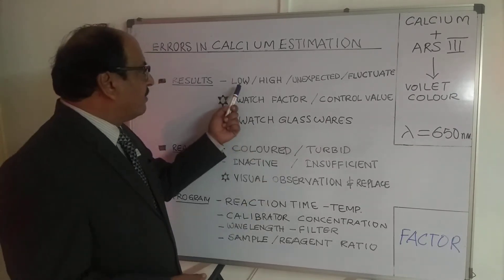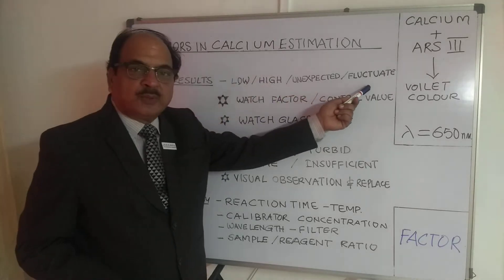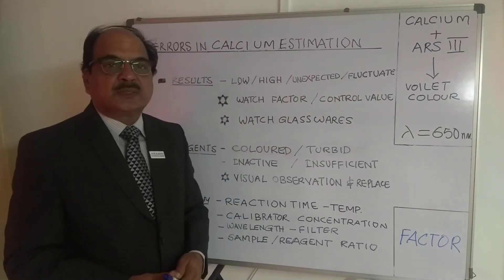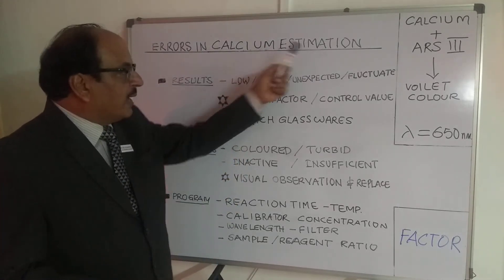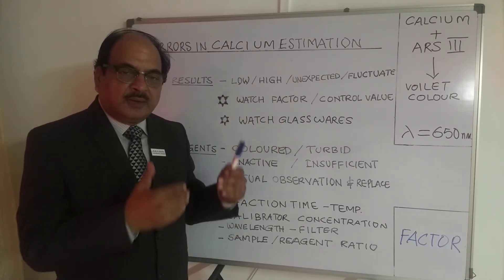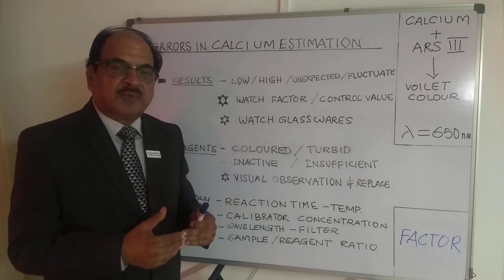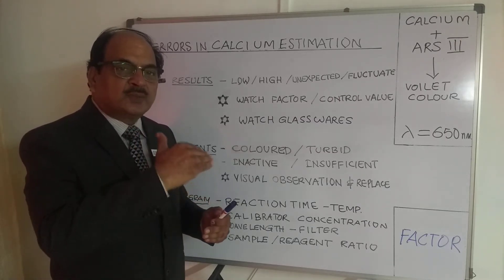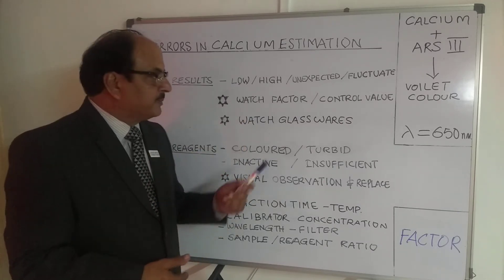In result-oriented errors, there are three or four categories: you can have low results, high results, fluctuating results where results are sometimes high and sometimes low, and sometimes results that are not as per the clinician's expectation. The important thing to watch in order to eliminate these errors is the factor. The factor is the calibrator concentration or standard concentration divided by the optical density when you run the assay.